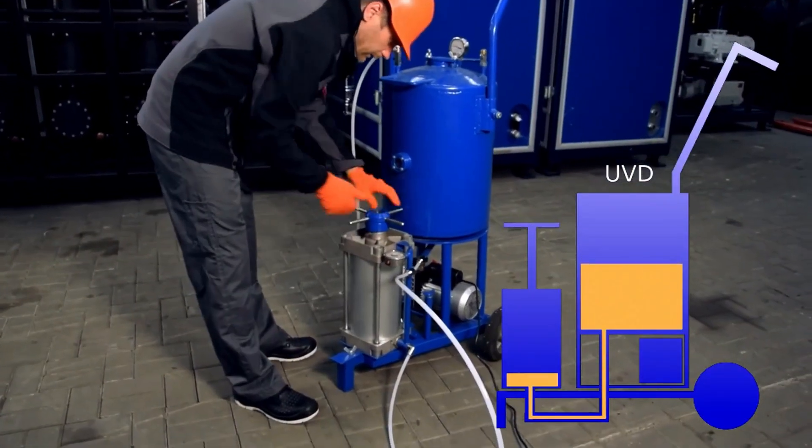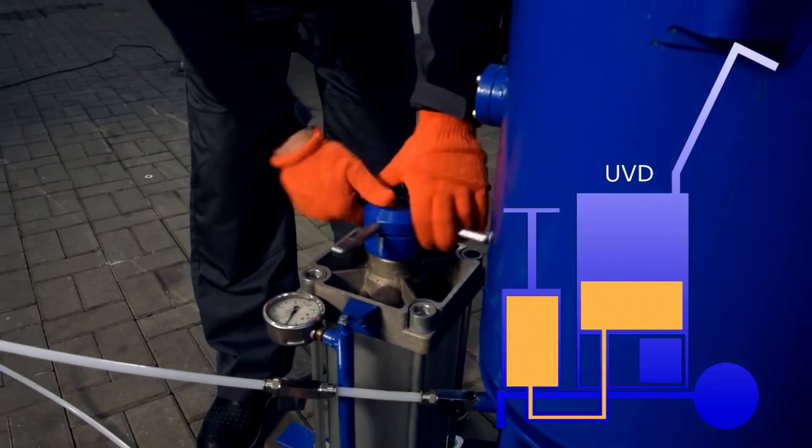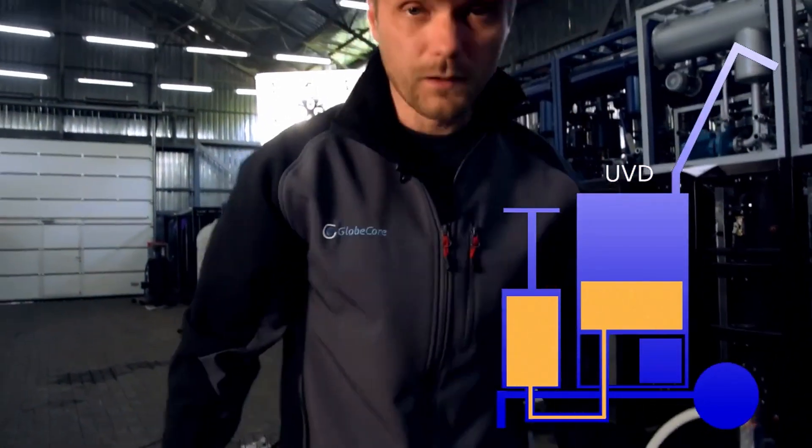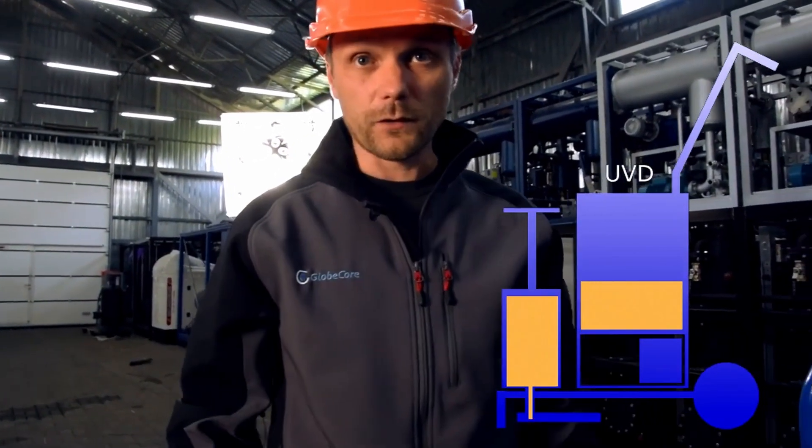Then the vacuum pump stops running, and a portion of oil with a volume of 4 liters is fed from the preparation unit into the filling unit due to rotation of a piston crank.